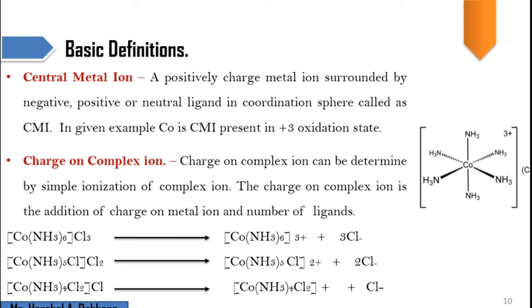To clarify: whatever species are present inside the coordination sphere do not undergo ionization; whatever is present outside the coordination sphere undergoes ionization. In yet another case where there is only one Cl outside, we get only a mono-positive charge on the complex ion. This is how we determine the charge on the complex ion.